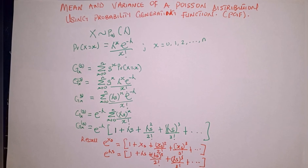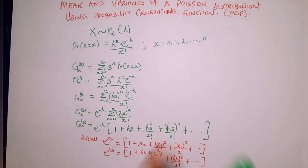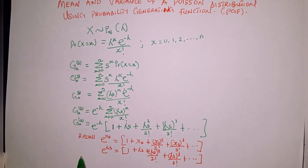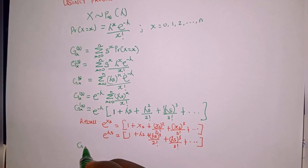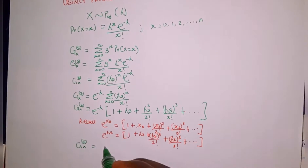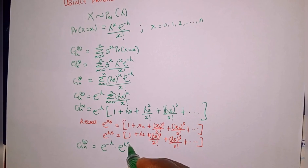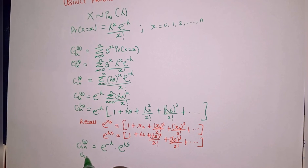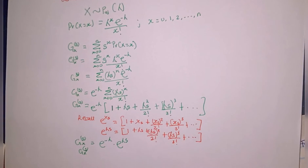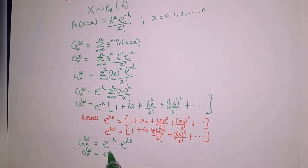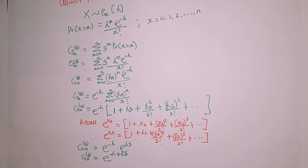We notice that the expression inside the bracket is the same as the expansion of e raised to the power of lambda s. So the whole of that bracket equals e raised to the power of lambda s. Therefore G sub X of s equals e raised to the power of minus lambda, times e raised to the power of lambda s. Simplifying by adding the exponents: G sub X of s equals e raised to the power of minus lambda plus lambda s.